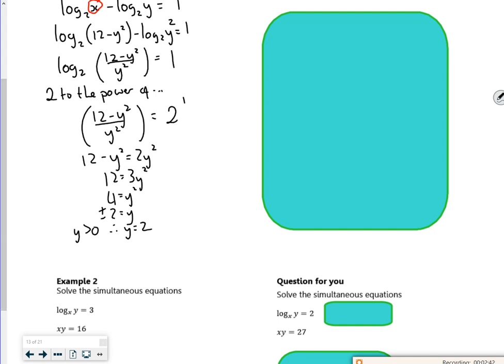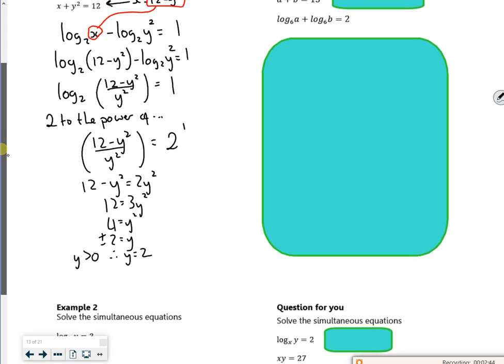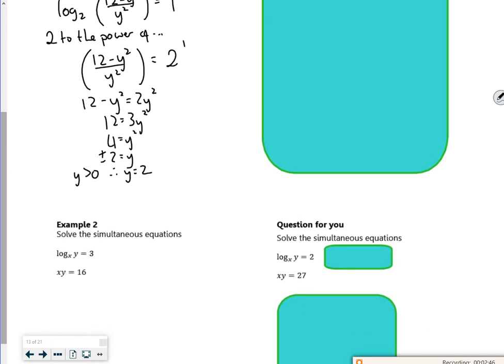so if I know that y is 2, that was my equation for x then. So x is 12 minus y squared, so x is 12 minus 2 squared, so x is 8.